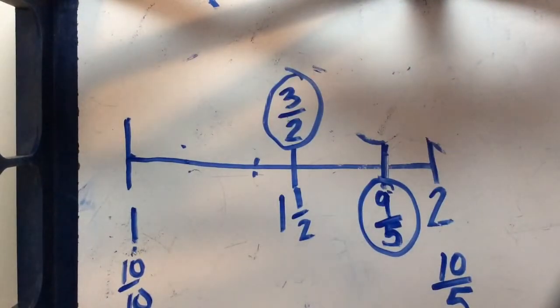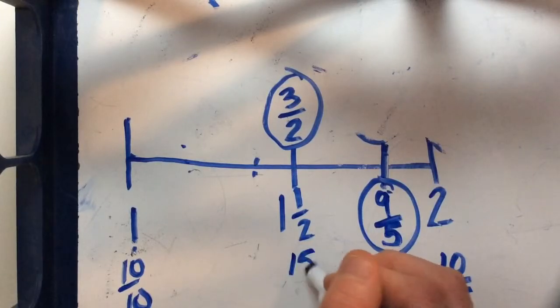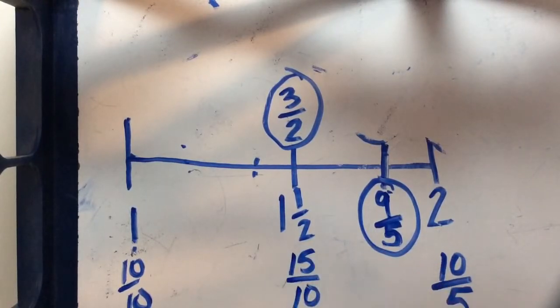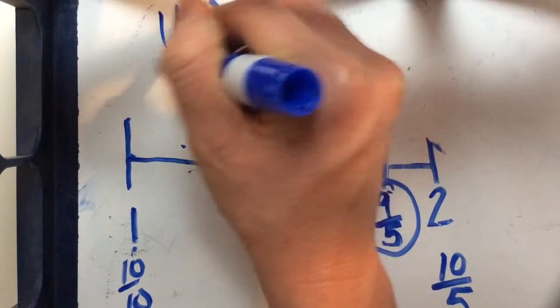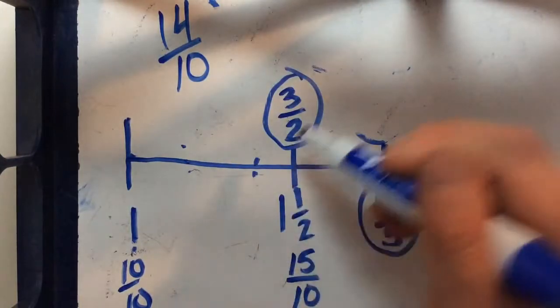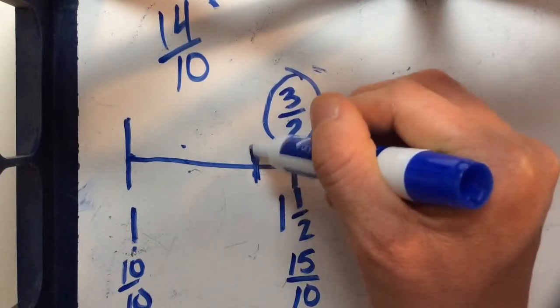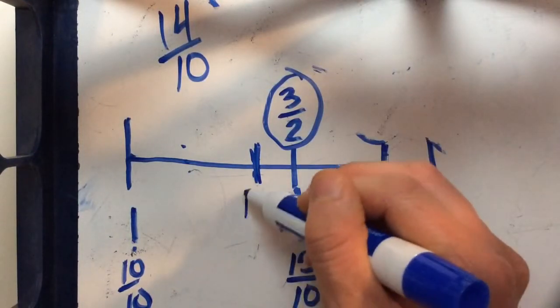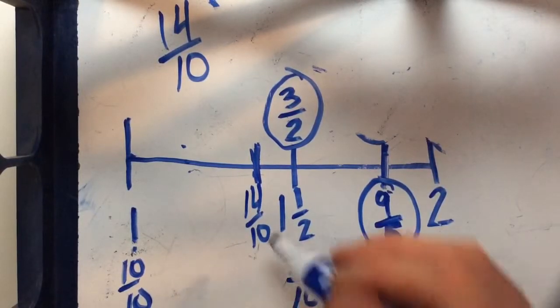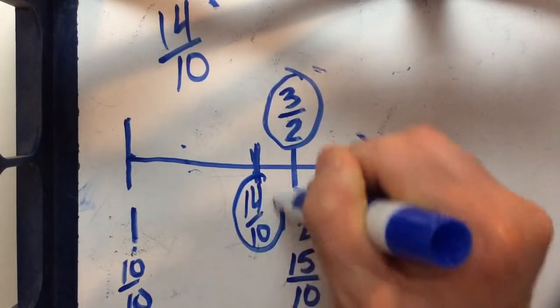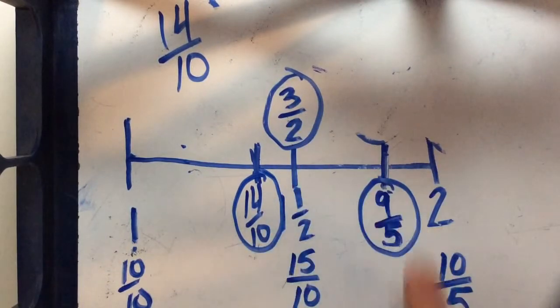So one thing I know is that 1 half is the same as 5 tenths. So 10 tenths plus 5 tenths, this would be 15 tenths right here. And I am trying to find 14 tenths so that should be just below 15 tenths right here. So I would plot 14 tenths on my number line and there I have my three improper fractions.